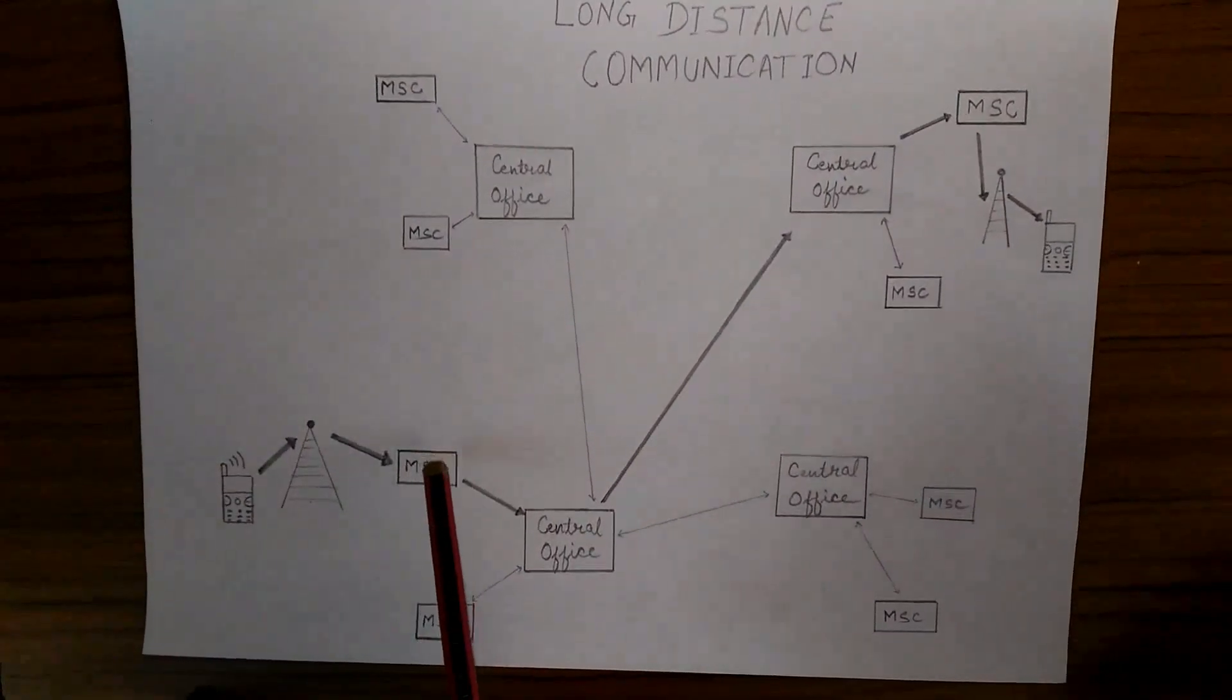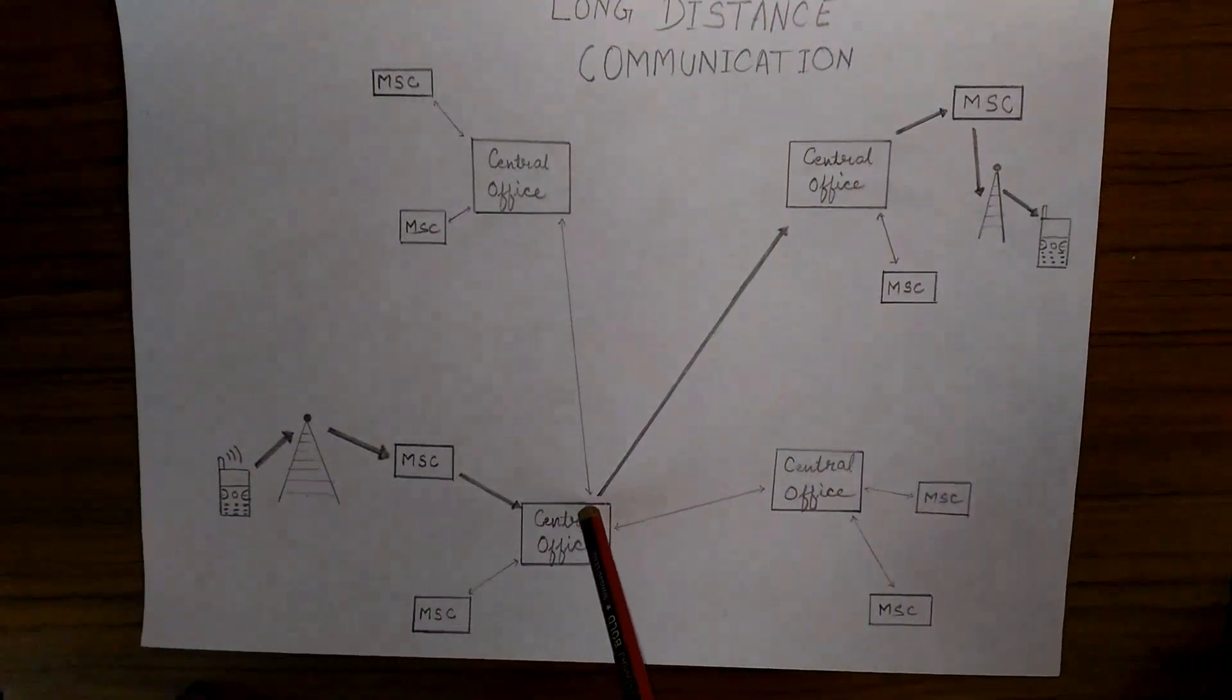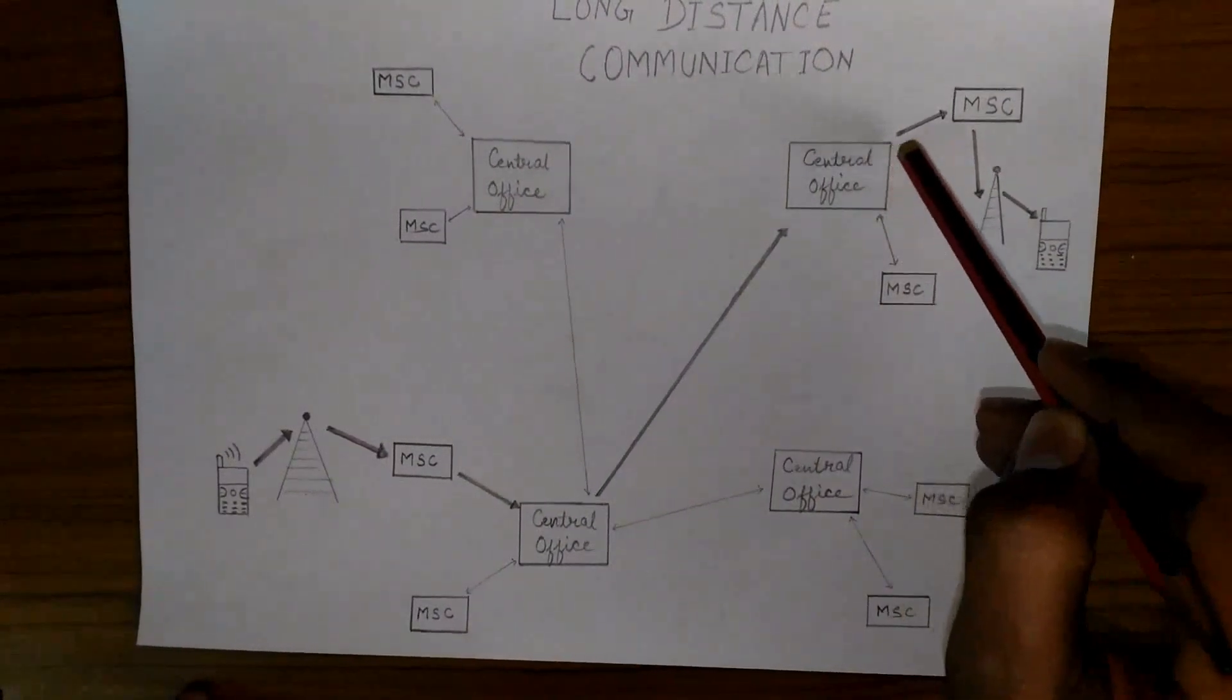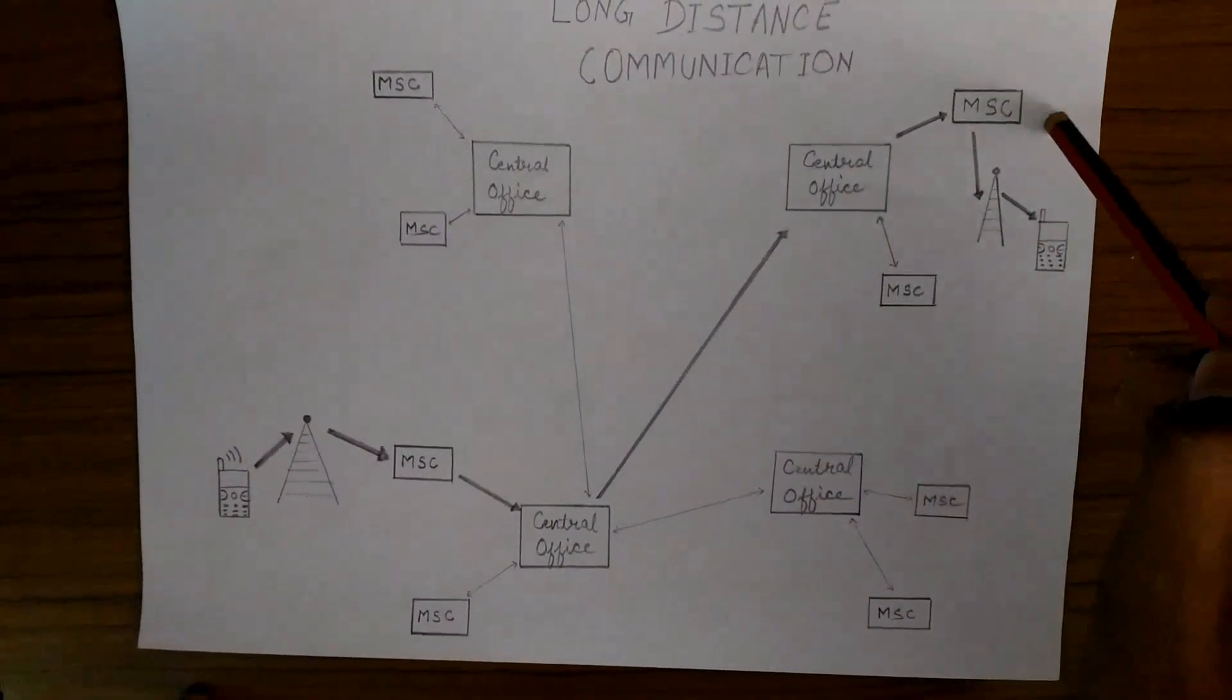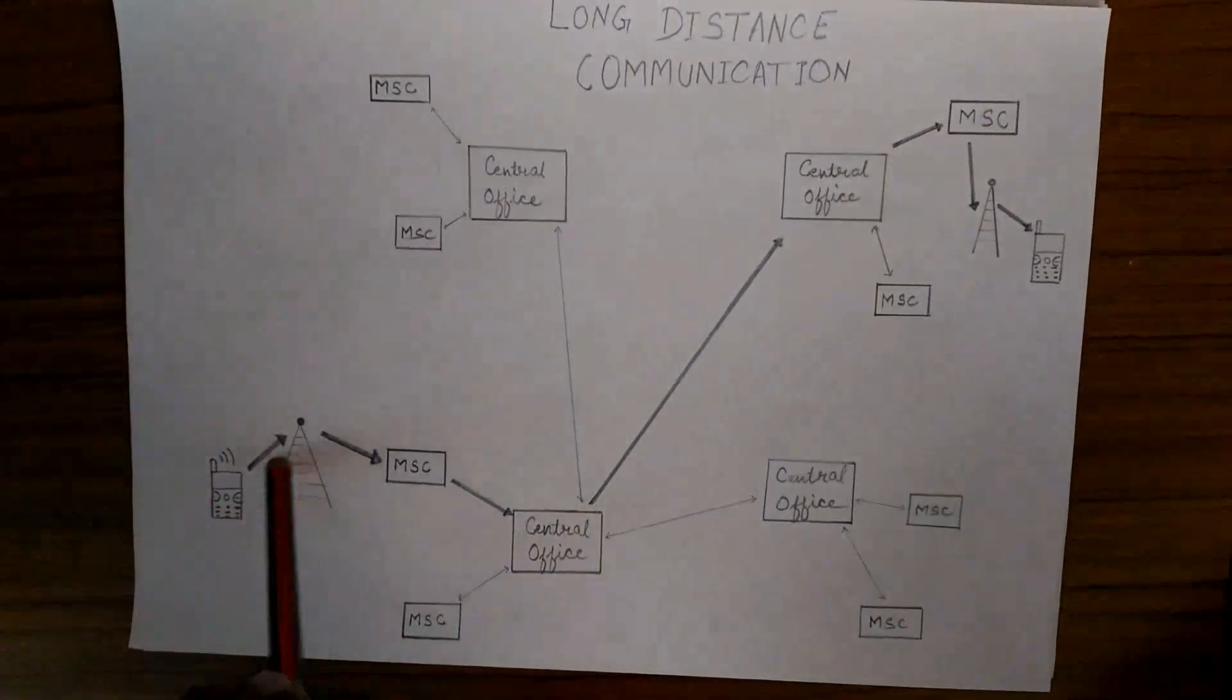In this process, it is long distance. So the MSC sends the information to the central office. Then the central office directly connects to the central office in USA, and that central office sends the information to the MSC, then MSC to the base station, and base station to the cell phone. That's how long distance communication takes place.